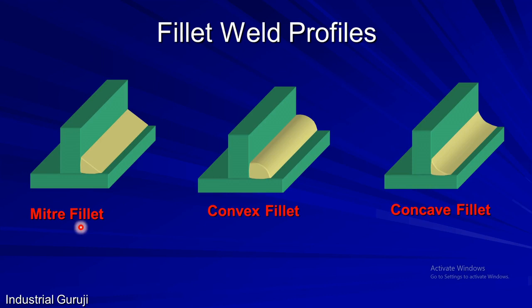There are three fillet weld profiles. The first is the mitre fillet weld, where the cross-section is a right-angle isosceles triangle — here design throat thickness and actual throat thickness are the same. The second is the convex fillet weld; since there is excess weld metal, the actual throat thickness is bigger than the design throat thickness. The third is the concave fillet weld. Here the design throat thickness is similar to the actual throat thickness, but due to smooth blending of toes, the stress concentration effect is reduced compared to others. These profiles are preferred for joints subjected to cyclic loads where fatigue is a major cause of failure.